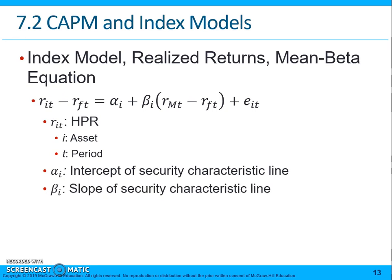Beta_I is the slope of the security characteristic line. R_MT is the market index return — as mentioned, for the most part that would be the S&P 500, though others are used as well.